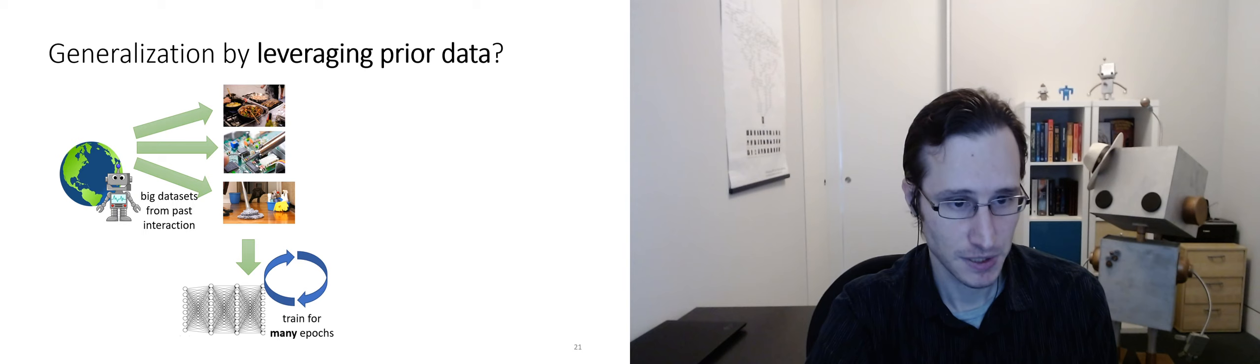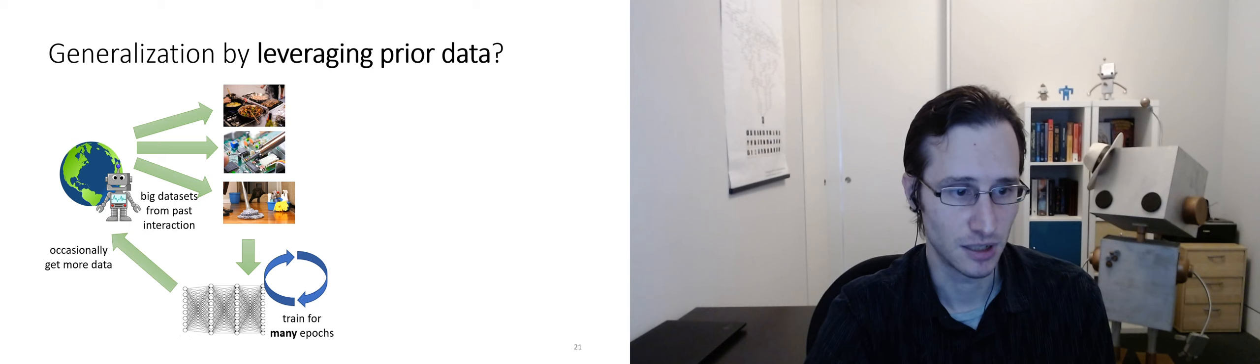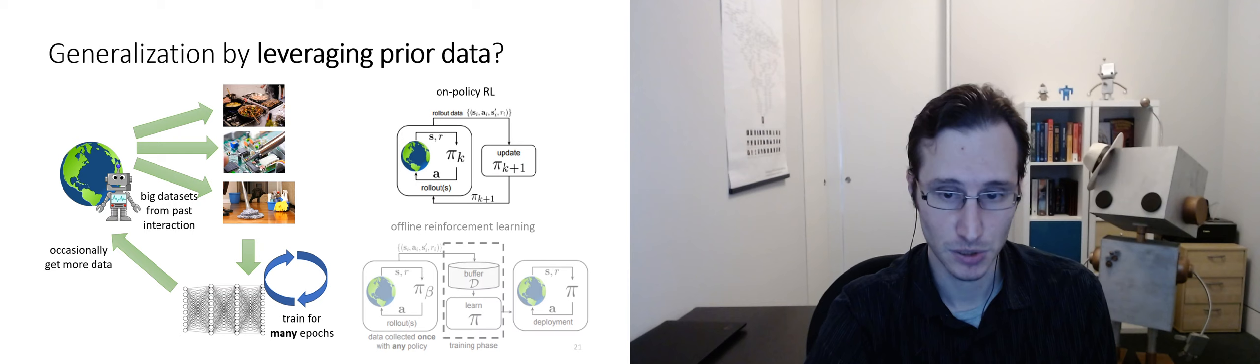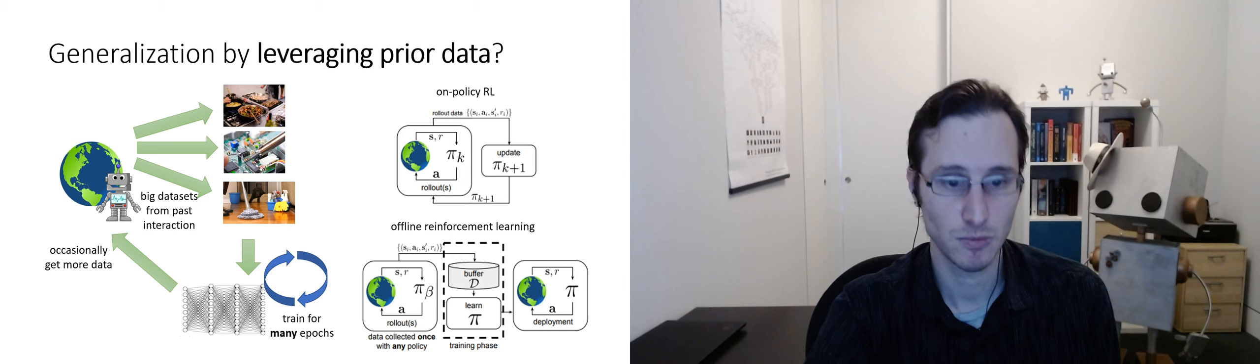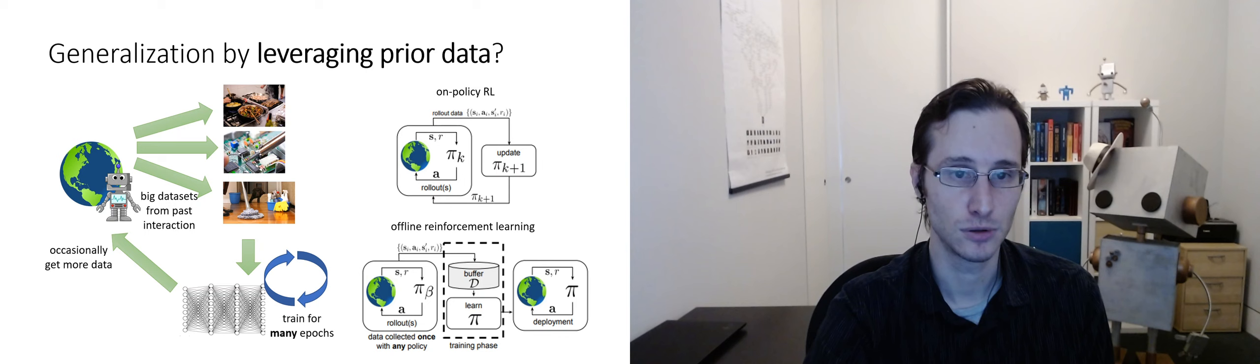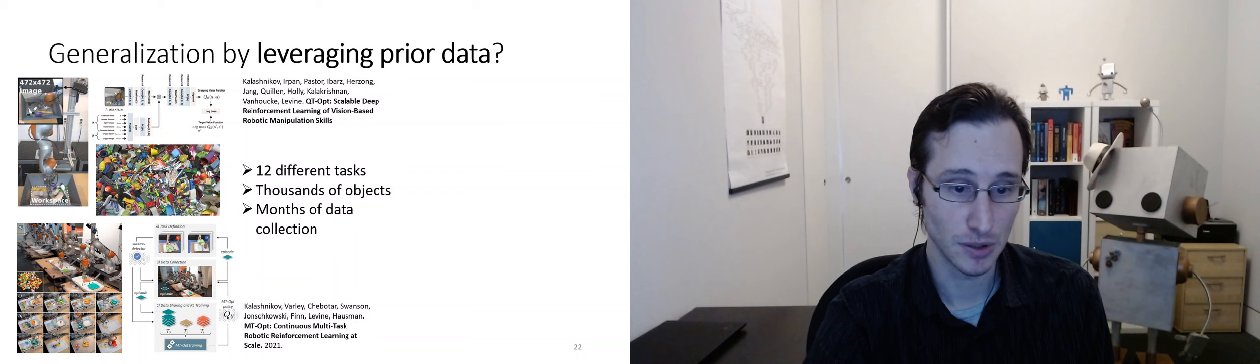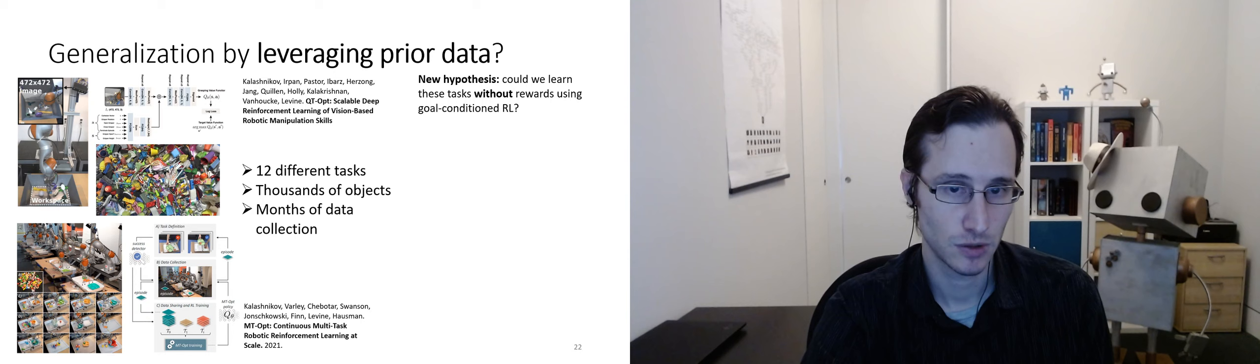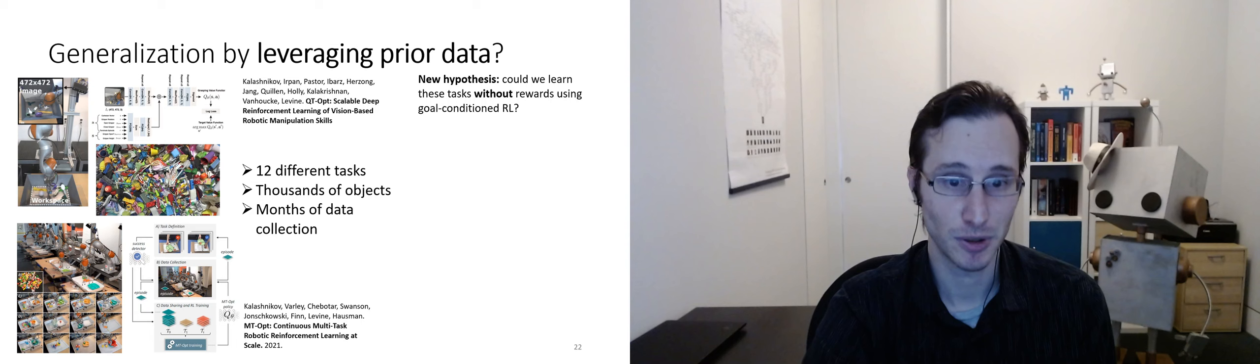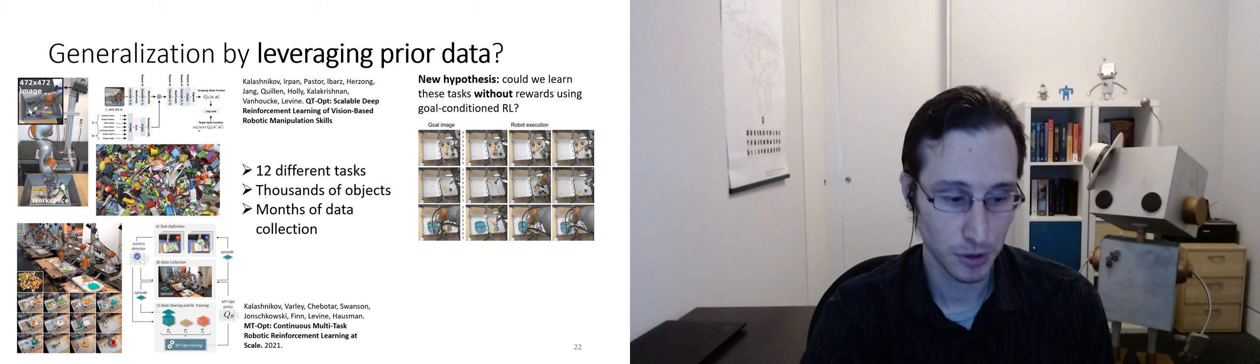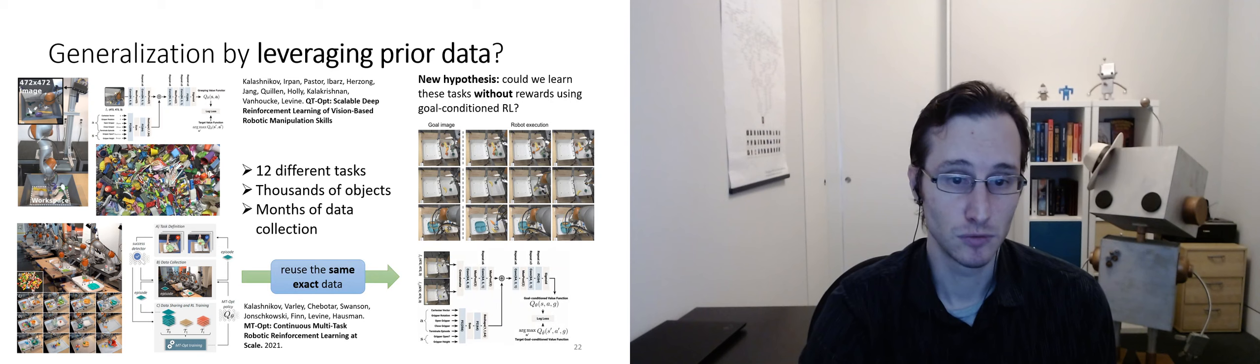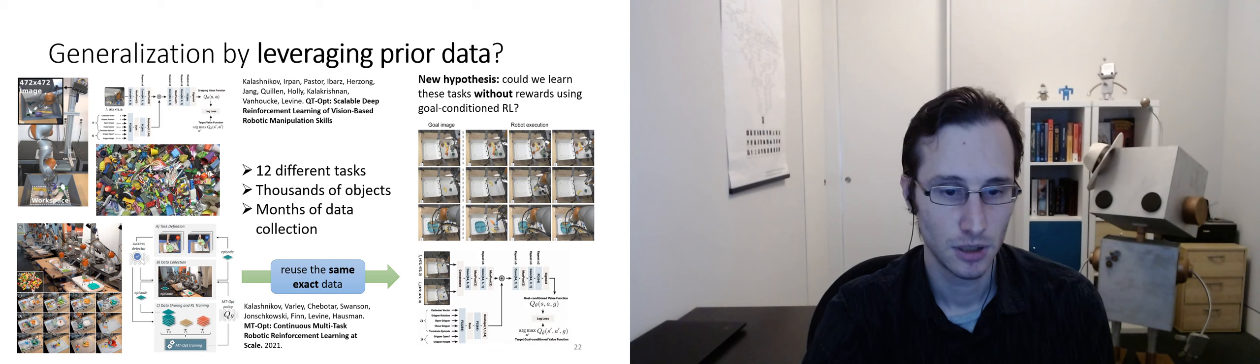Can we get better generalization from leveraging prior data? What if we have agents that have collected large data sets of past interactions that they're going to use to train for each new task they face? Instead of learning entirely through exploration, they're going to train up the best policy they can from their past data, and then occasionally get more data to improve. This motivates the development of methods that go beyond on-policy RL and actually instantiate offline reinforcement learning, where you use your past data to learn the best policy for a new task. I mentioned these grasping systems that we had built at Google. More recently, we extended them to a multitask setting, with 12 different tasks, thousands of objects, and months of data collection. This is a system that we call EmptyOpt.